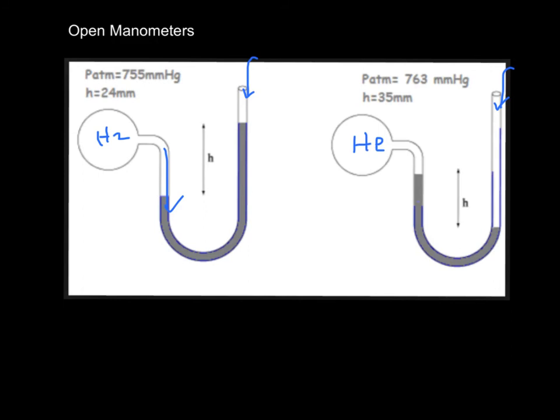This level is higher. So the hydrogen is not only pushing against the atmosphere, it's supporting all of the atmosphere, which is 755, and it's also supporting a column that has a height of 24. So this is going to give us 779 millimeters of mercury. So the pressure of the hydrogen gas is that.